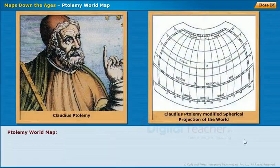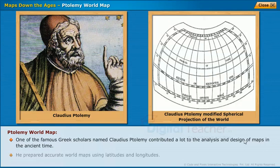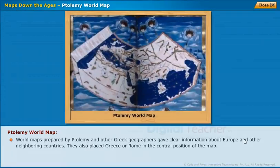Ptolemy World Map. One of the famous Greek scholars, Claudius Ptolemy, contributed a lot to the analysis and design of maps in the ancient time. He prepared accurate world maps using latitudes and longitudes. World maps prepared by Ptolemy and other Greek geographers gave clear information about Europe and other neighboring countries. They also placed Greece or Rome in the central position of the map.